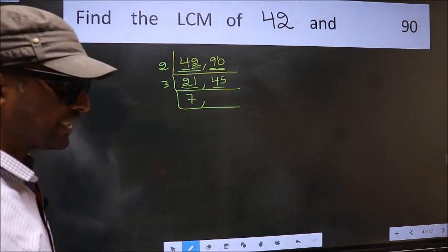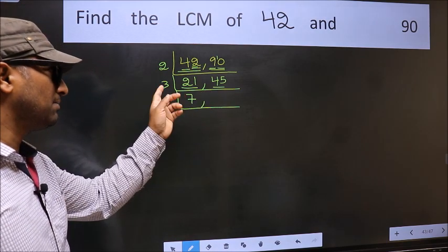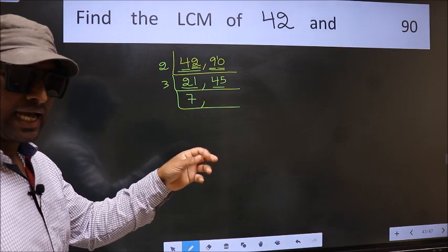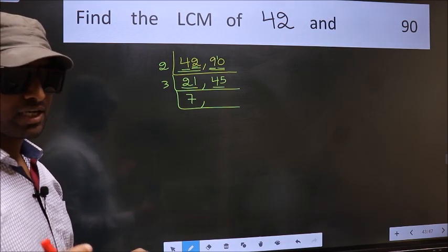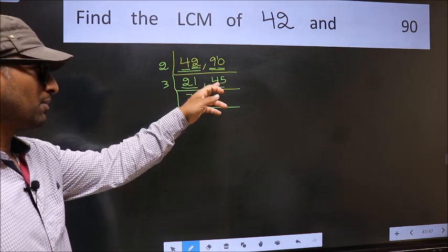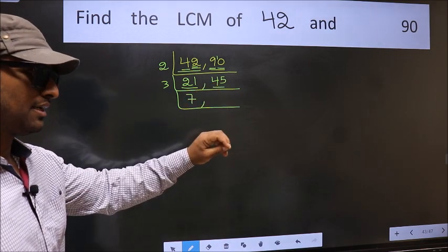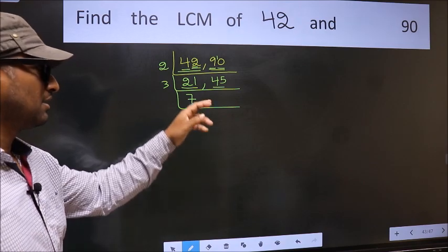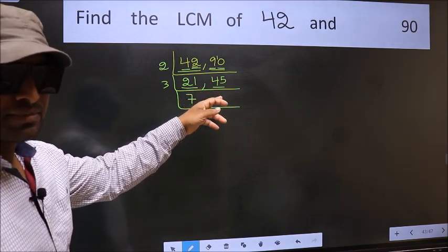To check whether 45 is divisible by 3 or not, for that we should add the digits. What I mean is 4 plus 5 equals 9. Is 9 divisible by 3? Yes. So this number is also divisible by 3.